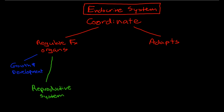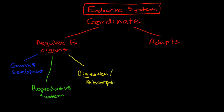Another example would be the control of digestion and absorption of nutrients, not just into the organism itself but into the various tissues within the body. A fourth example would be the balance of water and electrolytes. So that's how the endocrine system regulates the day-to-day function of the entire body.